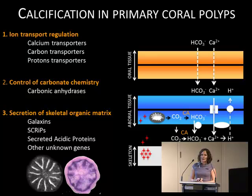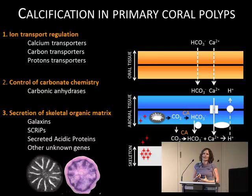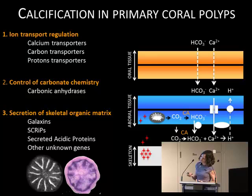The third component is the secretion of the skeletal organic matrix. In corals, we don't know a lot about the proteins involved in the skeletal organic matrix. One has been fully described to date — galaxin — and the others are mainly putative proteins involved in calcification, based on their amino acid composition and expression pattern. For example, one gene is preferentially expressed along the septa of the primary polyp, as shown here in purple.